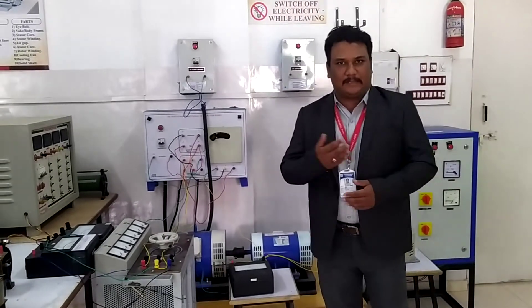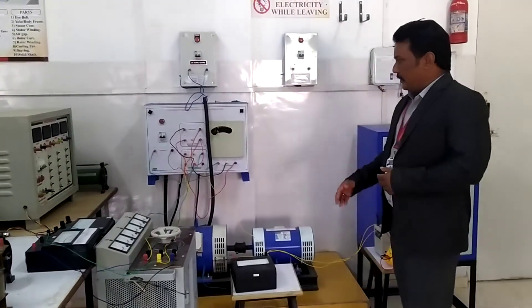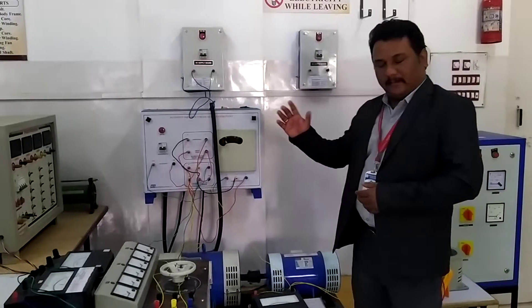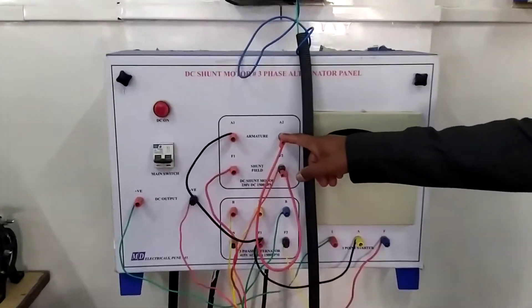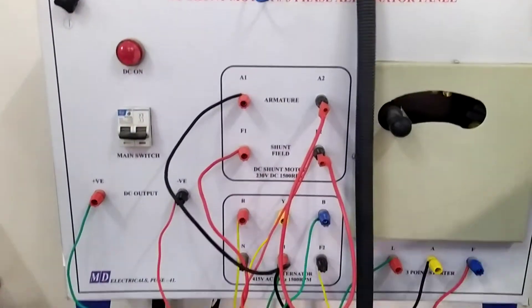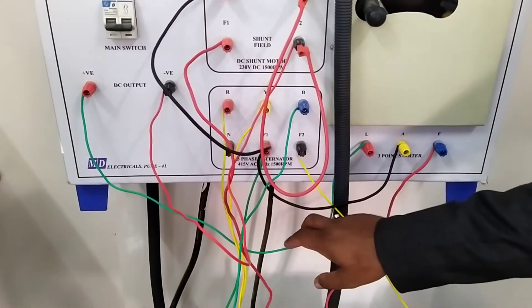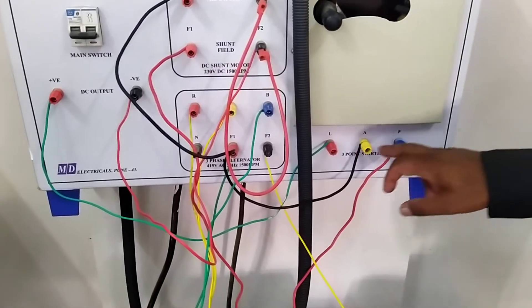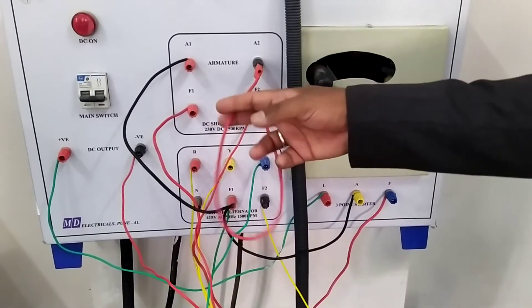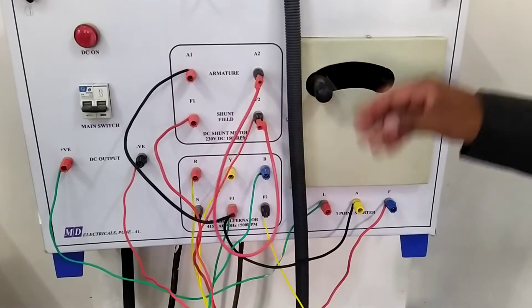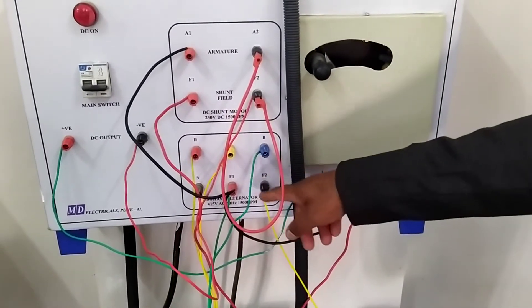Now, we are going to start our practical. So first of all, make the connection as per the circuit diagram. Here, DC shunt motor connection is seen here. The green wire is given to positive is the line. Then armature and field. This is the three point starter. And accordingly, DC shunt motor connection are done. Then armature is R, Y, V, N. And this is the field.